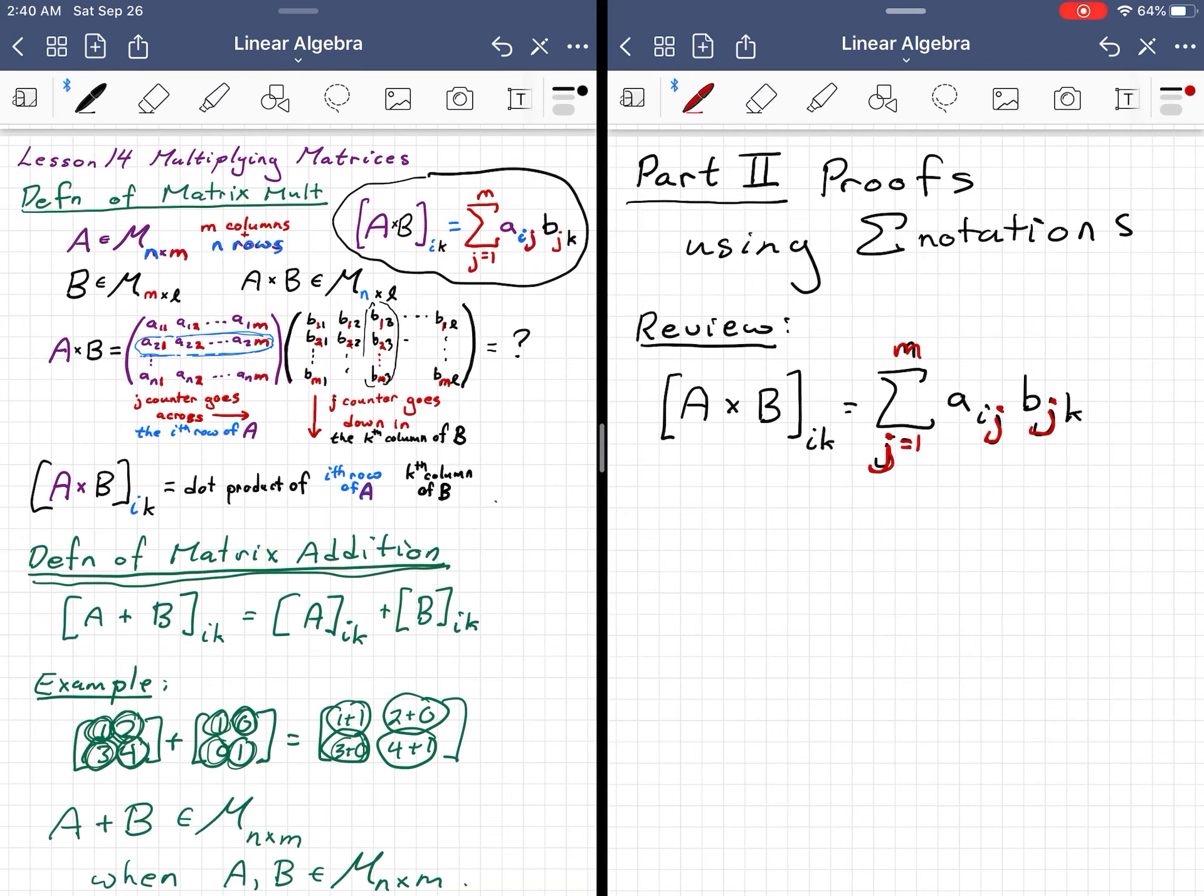...is because we're going across the row of A, across the row of A, and down the column of B. Okay, so that's what's happening. That's what our counter is doing.